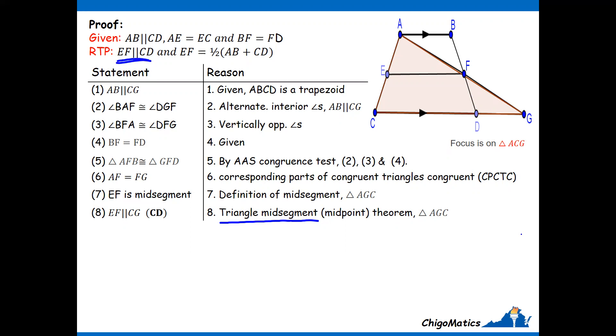What is left is to show that EF is equal to half the sum AB plus CD. When you apply the midpoint theorem, it doesn't end there to simply say EF is parallel to CG. It says EF is half CG. We are going to write that down: EF equals half CG, still from the triangle midpoint theorem.